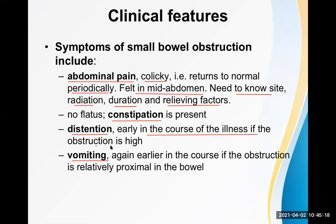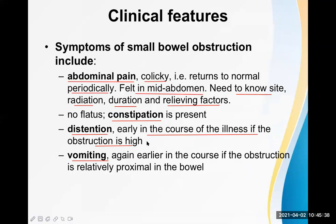Abdominal distension occurs early if the obstruction is high — for example duodenal or proximal jejunal obstruction — otherwise it occurs later. Vomiting also occurs earlier when the proximal segment is obstructed: duodenal obstruction causes vomiting earlier than jejunal obstruction, which is earlier than ileal obstruction.